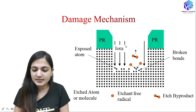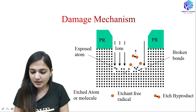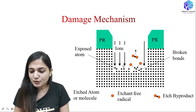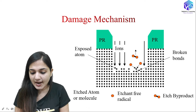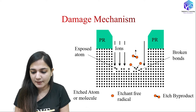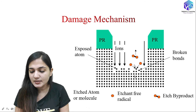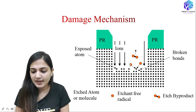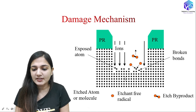You can see the damaging mechanism illustrated here. This is the material with the atoms or molecules we want to etch out. Heavy ions are applied, along with etchants which react with the target atoms, removing them from the surface. The etchant atoms react with the atoms of the material, ions increase the rate of reaction, and a byproduct is formed. You can see the broken bonds — these are the exposed atoms where damaging occurs.